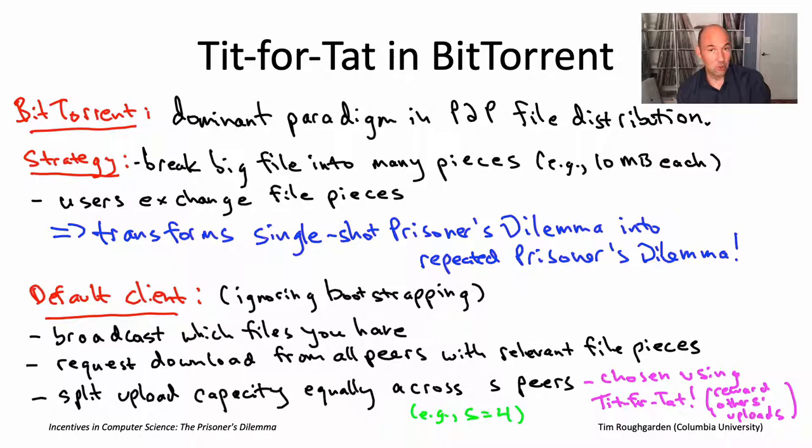So that concludes what I wanted to say about the prisoner's dilemma. Next, I want to move on to module number three, where we'll talk about the challenges of asymmetric information and specifically adverse selection and moral hazard. I'll see you there.